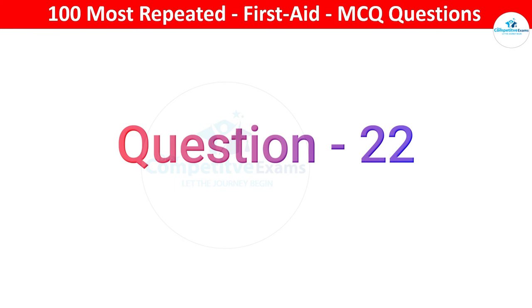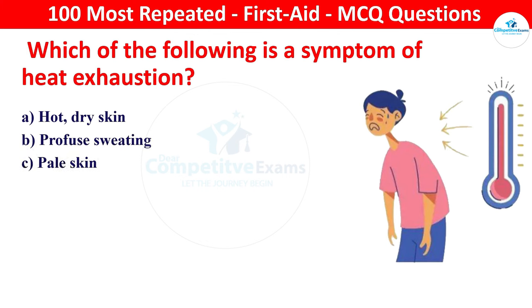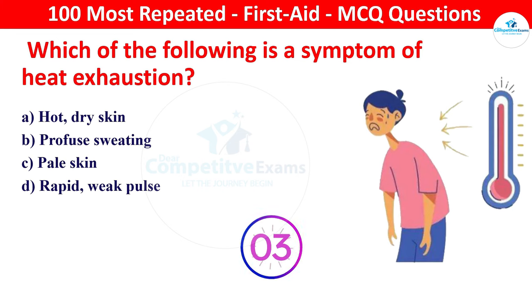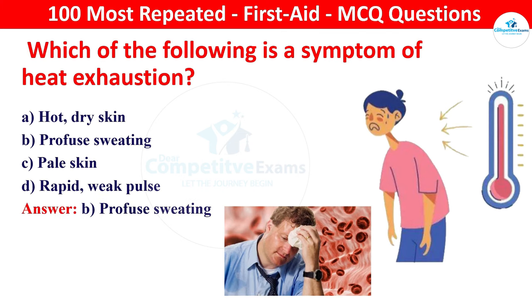Next question: which of the following is a symptom of heat exhaustion? Options: hot dry skin, profuse sweating, pale skin, or rapid weak pulse. The right answer is profuse sweating. Heat exhaustion is characterized by heavy sweating as the body tries to cool itself.